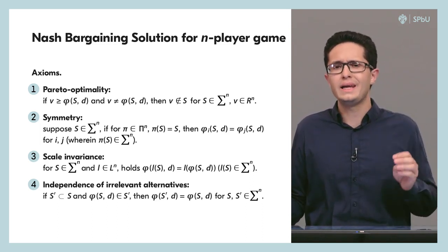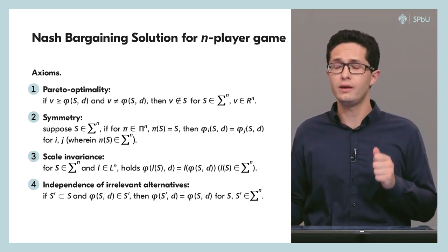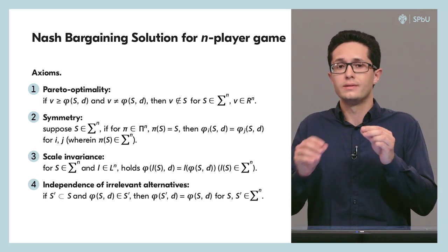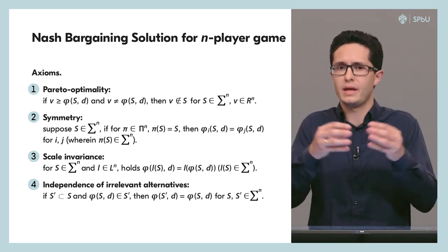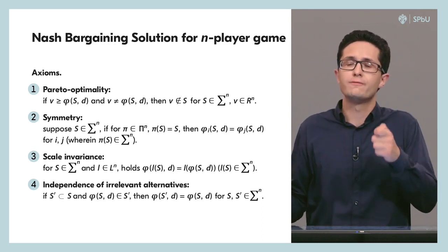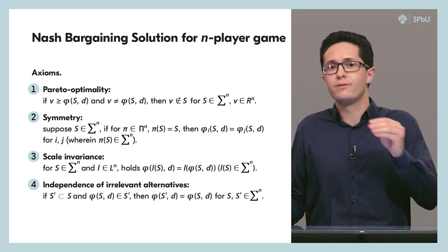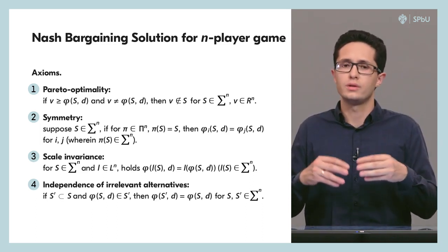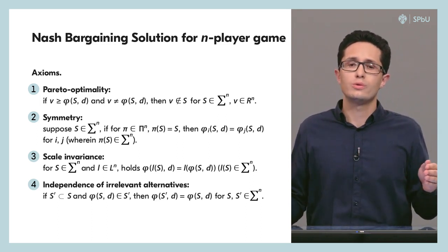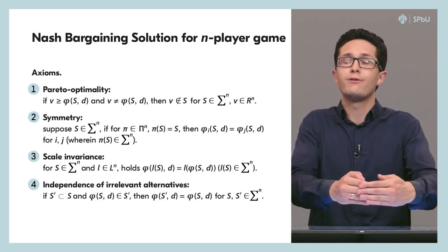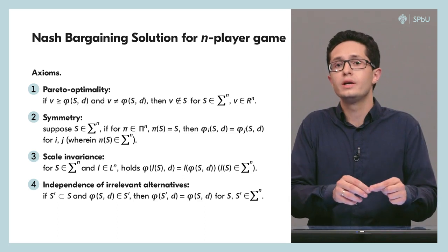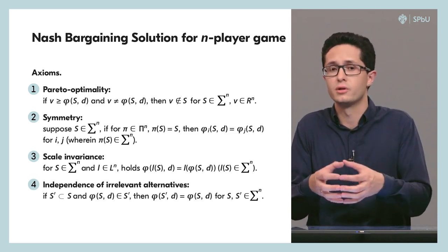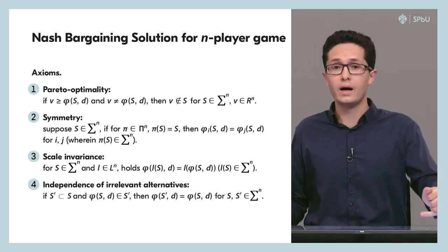The Nash bargaining solution, like any other cooperative solution in game theory, is defined using a set of axioms. An axiom is a mathematical property which has a certain physical meaning. When we define a cooperative solution, we want it to satisfy desirable properties — for example, we want it to be Pareto optimal, meaning it should have good outcomes. We define a set of axioms, then derive the solution, and construct an analytical formula for it. For the Nash bargaining solution we define four axioms.